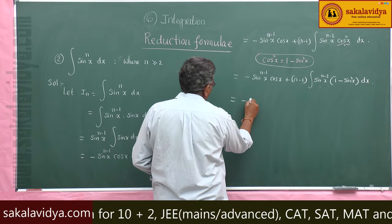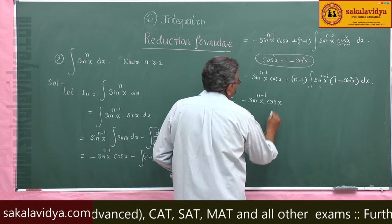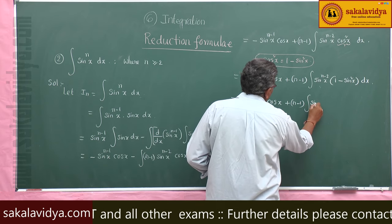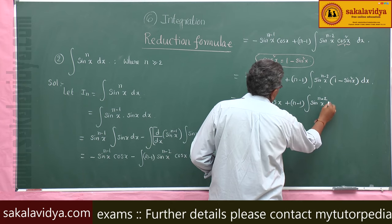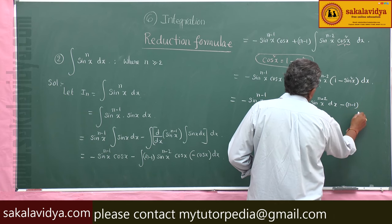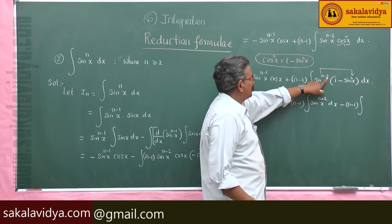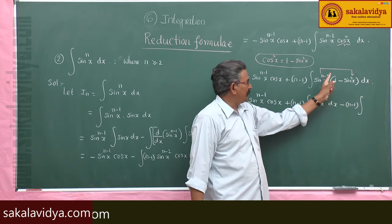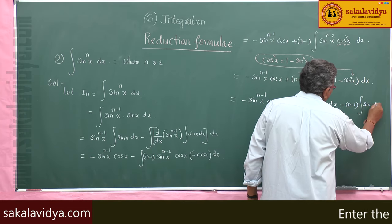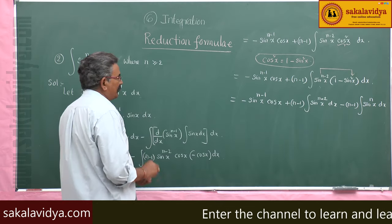Now, expanding this: minus sin x to the power of n minus 1 cos x, plus (n minus 1) times the integral of sin x to the power of n minus 2 dx, minus (n minus 1) times the integral of sin x to the power of n dx. This last term — sin x to the power of n dx — is again the same integral, which is I_n.